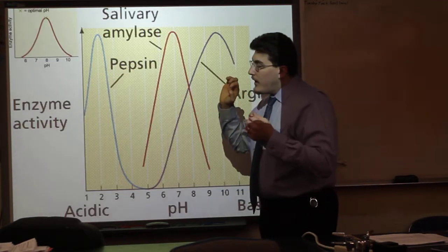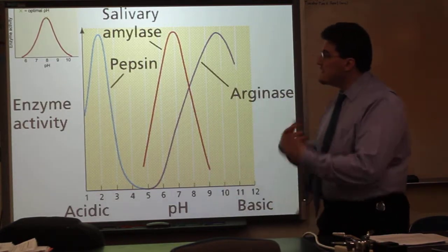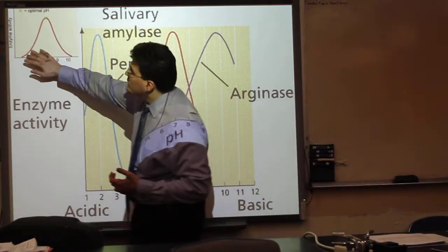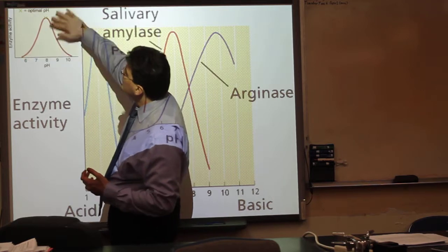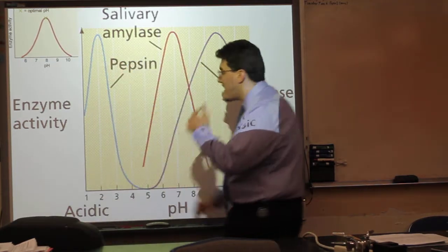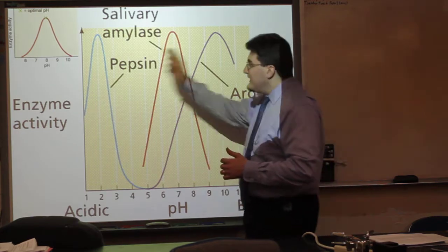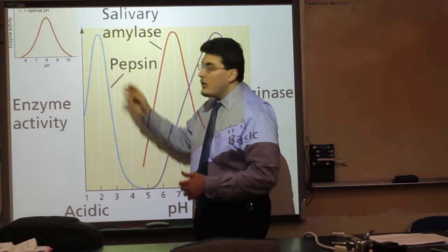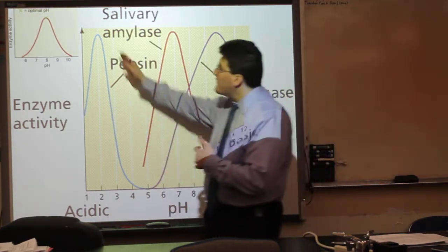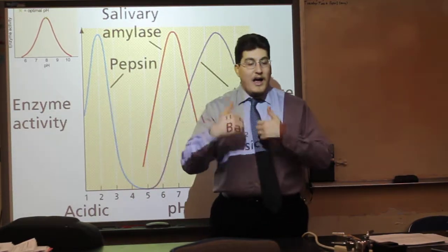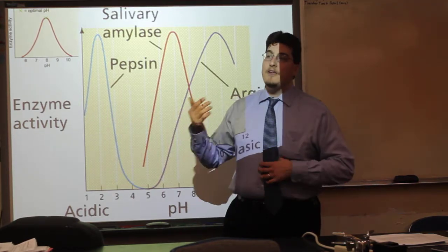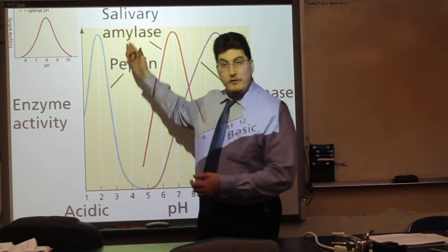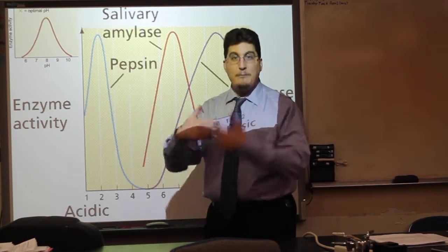pH is another factor that affects enzyme rate of reaction. It has a general curve shape of increasing to an optimal pH and then decreasing past that point. Each enzyme has its own optimal pH. For example, pepsin, which functions in our stomachs, has an optimal pH of 2 — matching the hydrochloric acid concentration in the stomach — making it the perfect environment for pepsin to perform its function.